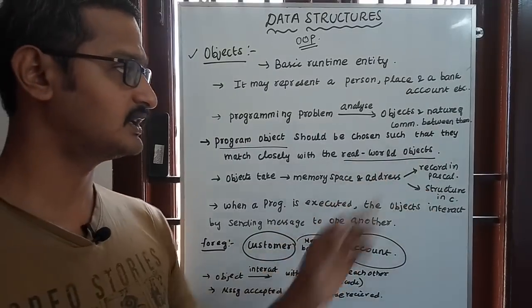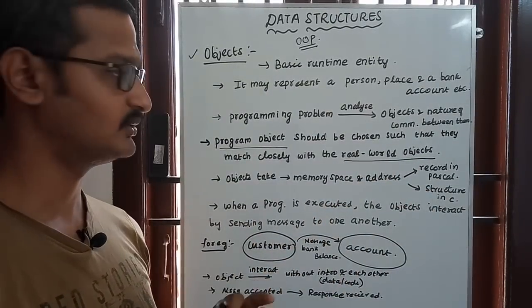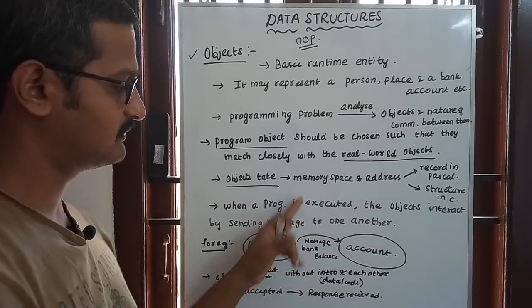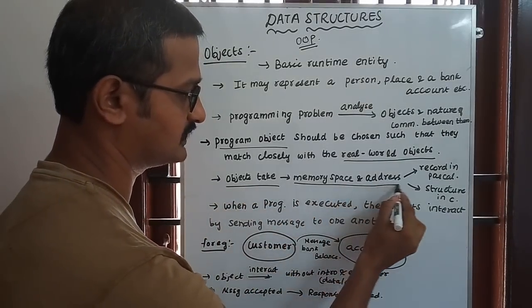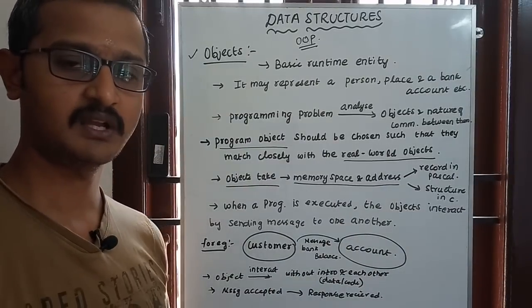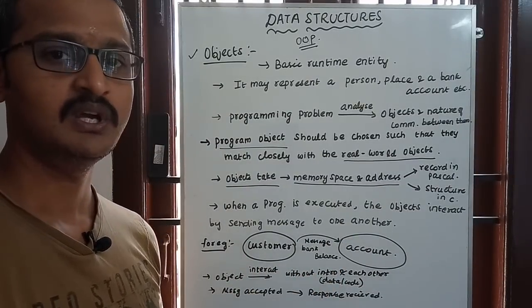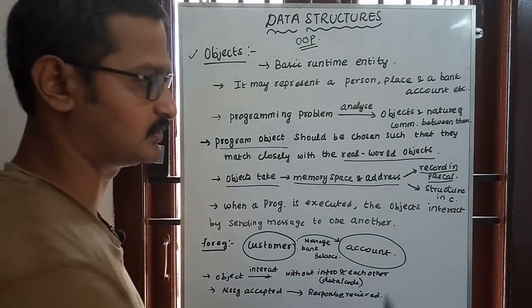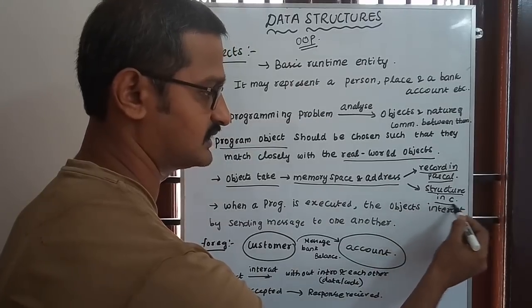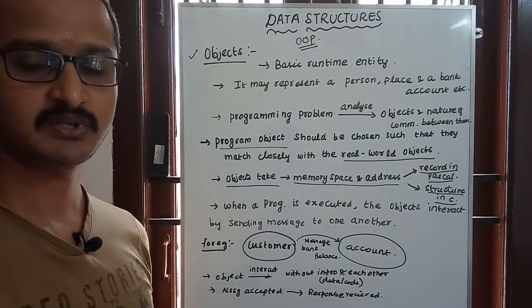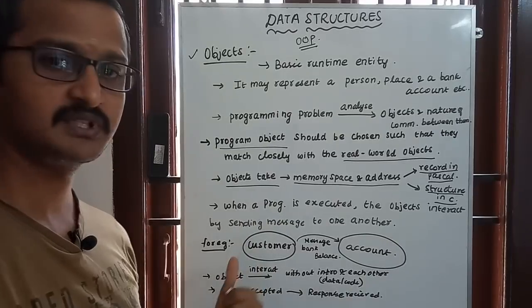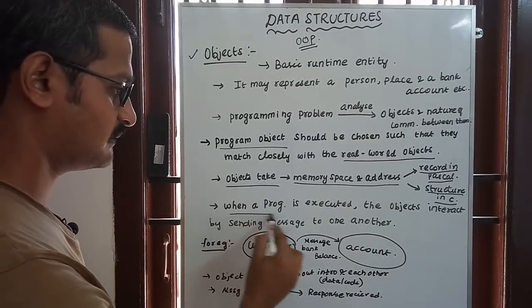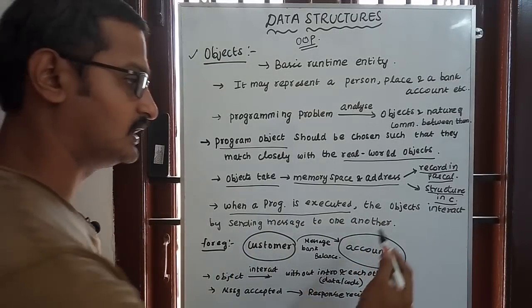Program objects relate to real-world objects that return in memory. Objects take memory space and address, similar to records in Pascal or structures in C. The objects occupy memory space.